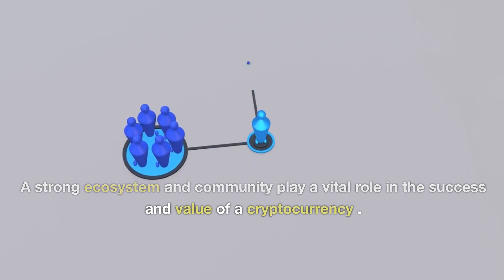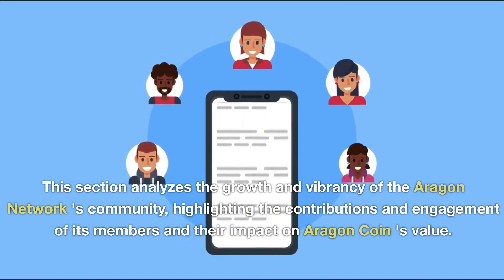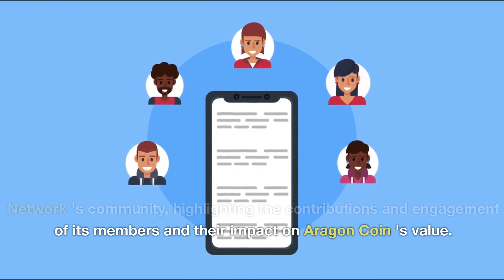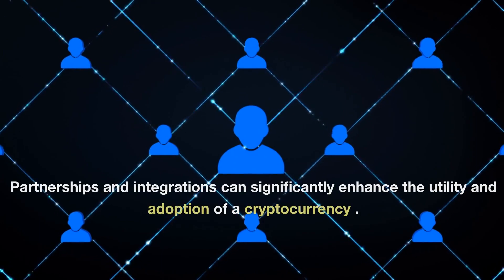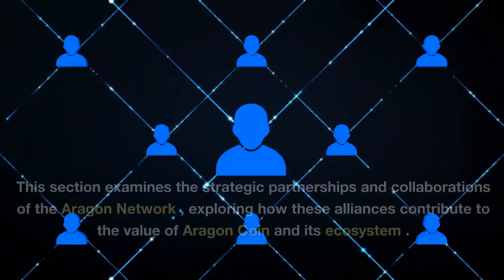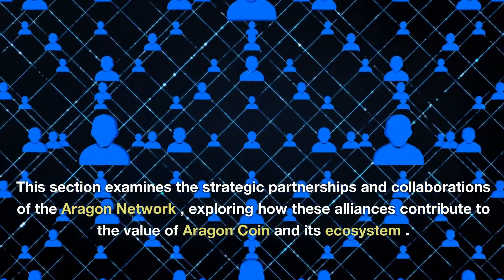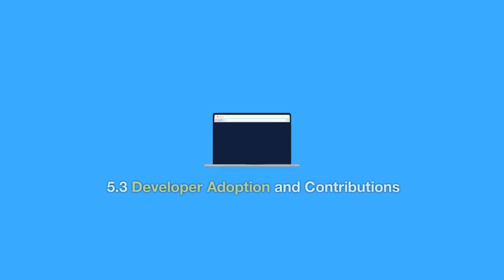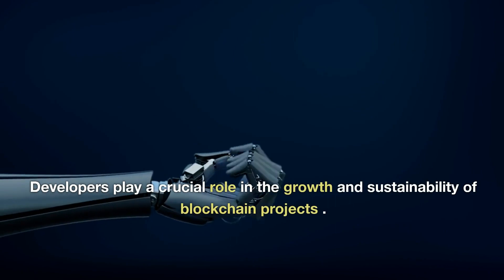Ecosystem Development: 5.1 Aragon Network and Community — A strong ecosystem and community play a vital role in the success and value of a cryptocurrency. This section analyzes the growth and vibrancy of the Aragon Network's community, highlighting the contributions and engagement of its members and their impact on Aragon Coin's value. 5.2 Partnerships and Integrations — This section examines the strategic partnerships and collaborations of the Aragon Network, exploring how these alliances contribute to the value of Aragon Coin and its ecosystem.